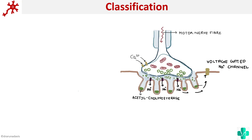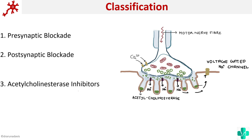We know that this is a neuromuscular junction. Based on the site of action or the mechanism of action of these drugs, we can classify them into drugs causing presynaptic blockade, postsynaptic blockade, and acetylcholinesterase inhibitors. Acetylcholinesterase is in the synaptic cleft, which is why we classify it separately. Now we will see each one by one.